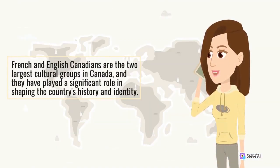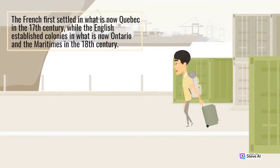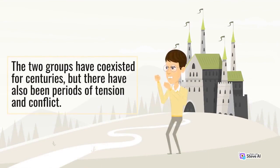French and English Canadians are the two largest cultural groups in Canada, and they have played a significant role in shaping the country's history and identity. The French first settled in what is now Quebec in the 17th century, while the English established colonies in what is now Ontario and the Maritimes in the 18th century. The two groups have coexisted for centuries, but there have also been periods of tension and conflict.